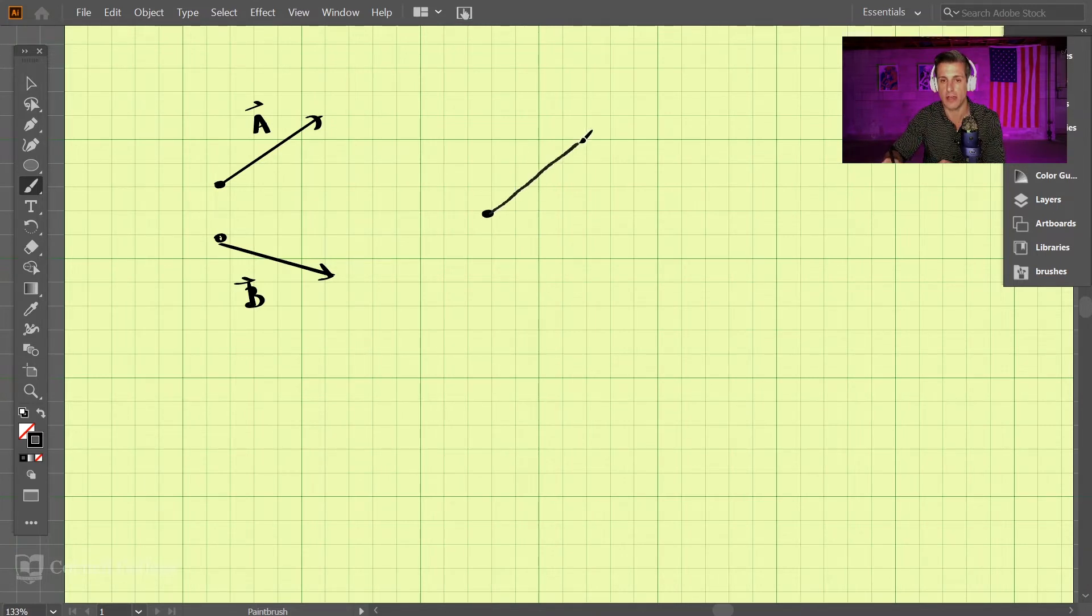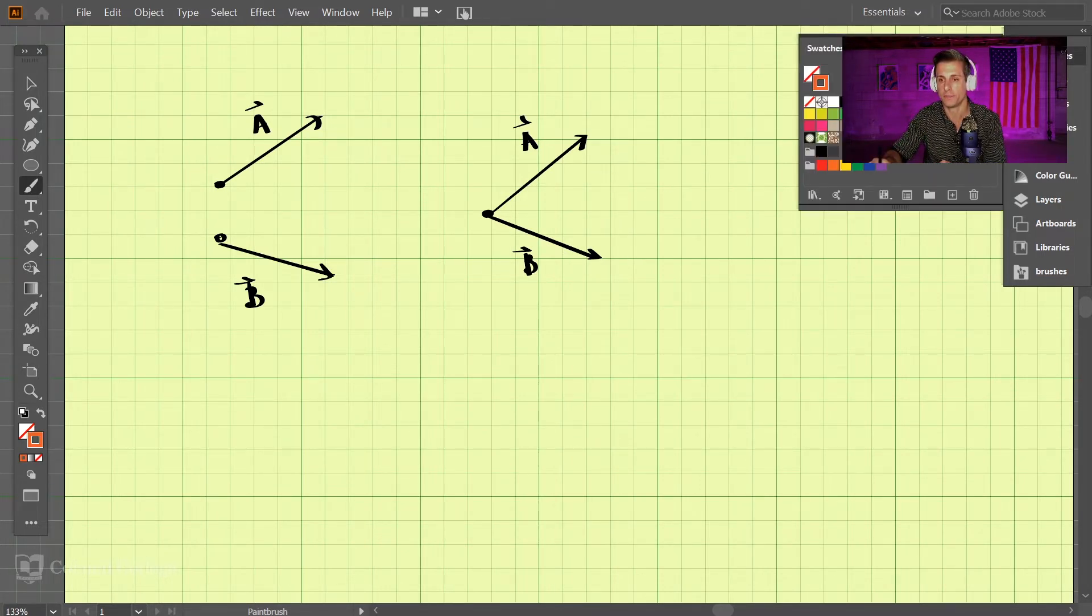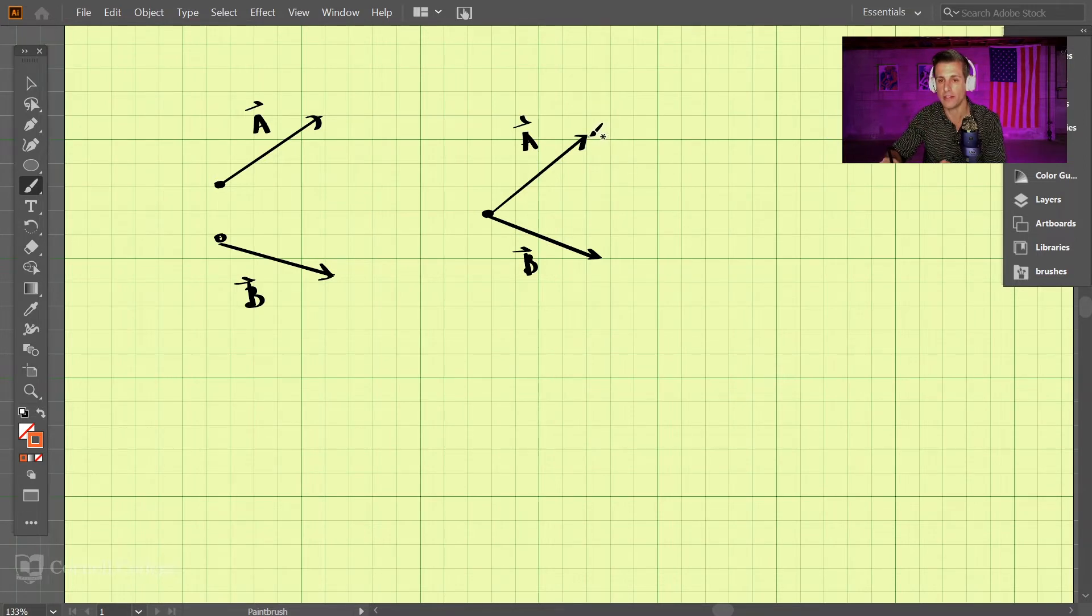So we have A pointed like this and B something like that, so we have A and B. And what we want to do is we want to draw lines that are perpendicular to each of these vectors, so I'll start with A. So that line is supposed to be perpendicular here, so that's supposed to be 90 degrees.